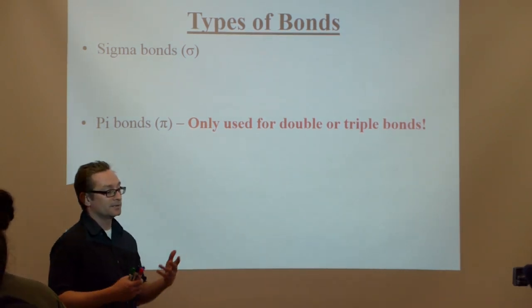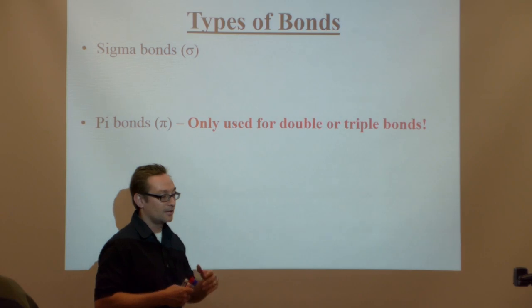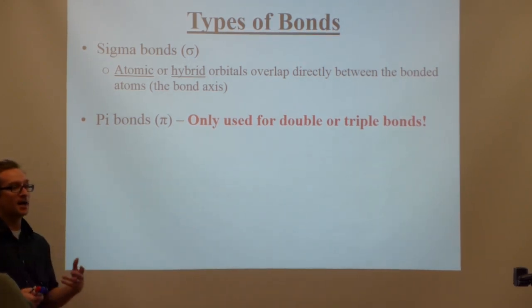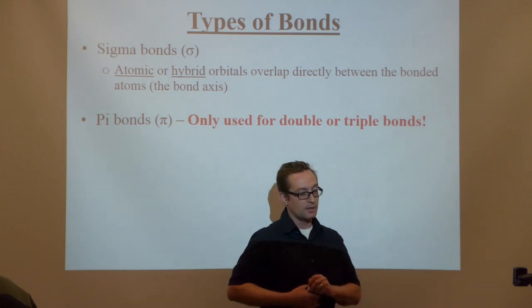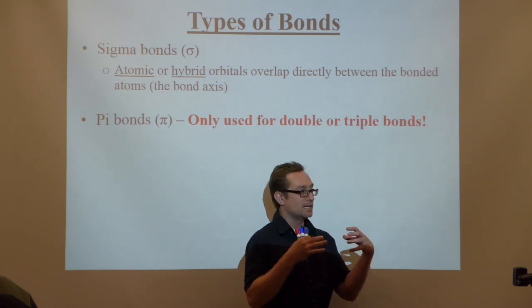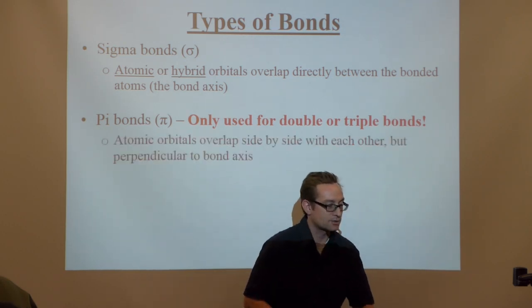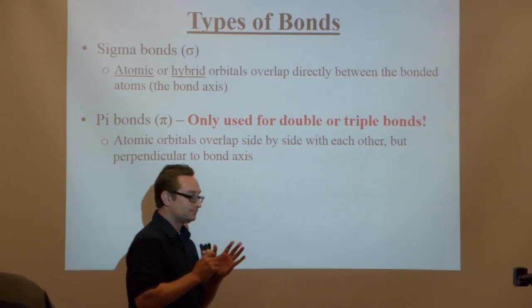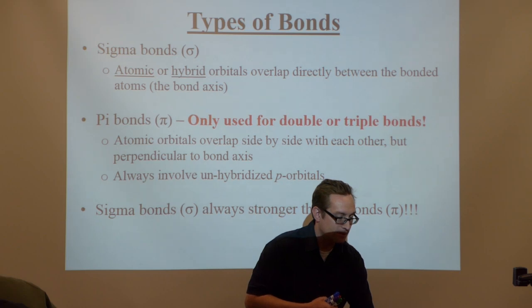When we draw these Valence Bond sketches, there are two kinds of bonds: sigma bonds and pi bonds. Pi bonds are only used if we have a double or triple bond. If we don't have any double or triple bonds, they're always called sigma bonds. Sigma bonds are made using hybrid orbitals, but the double and triple bonds are not made using hybrid orbitals. Sigma bonds are always stronger than pi bonds.